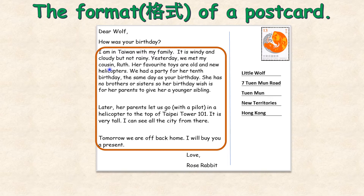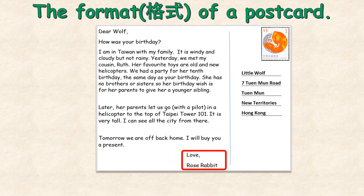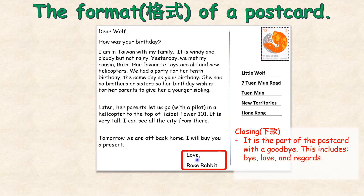This part of the postcard is called the body. The main events or topics in the postcard are written in the body. It is the writing or paragraphs with many words. 'Love, Rose Rabbit' — that is the closing. It is the part of the postcard with a goodbye. This includes words like bye, love, and regards. In this letter, Rose Rabbit puts 'love' because Wolf is her very, very good friend. The writer's name, Rose Rabbit, is written at the end of the postcard's writing, in the closing.